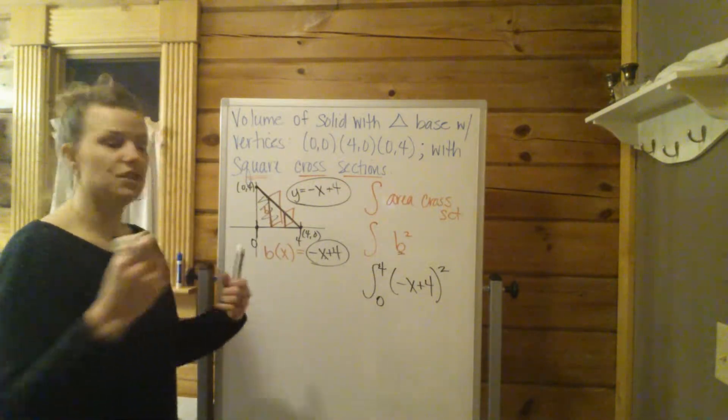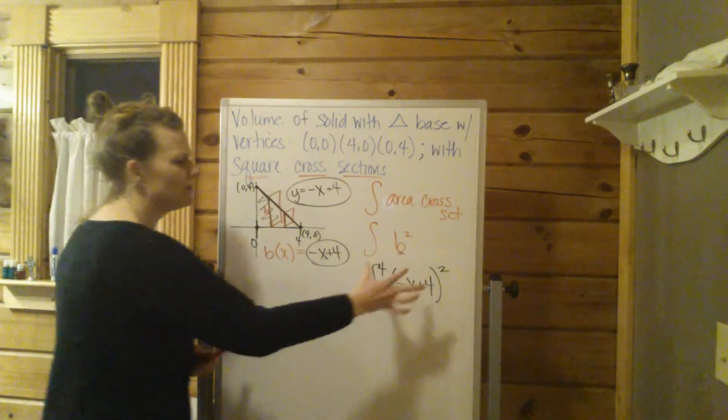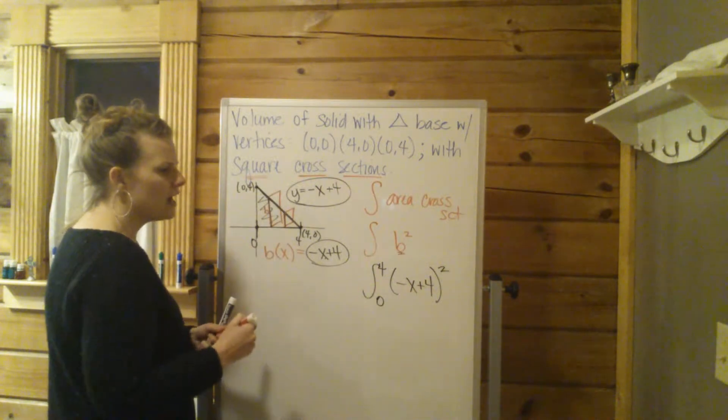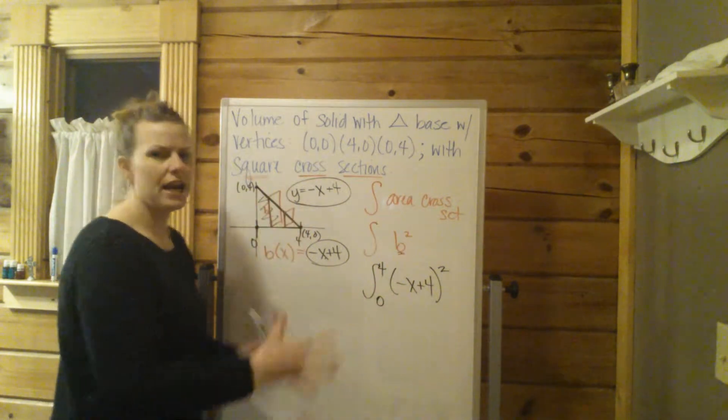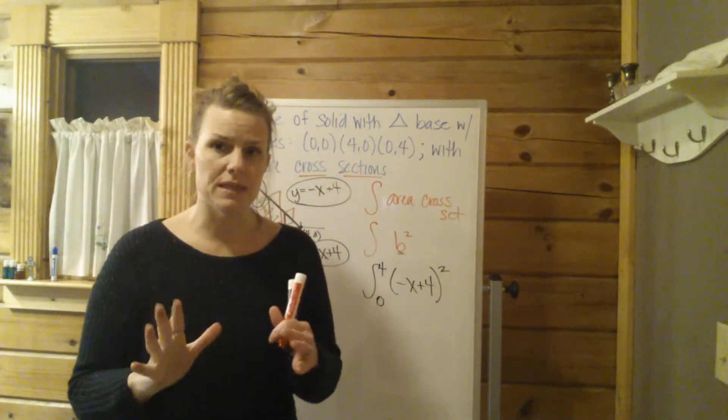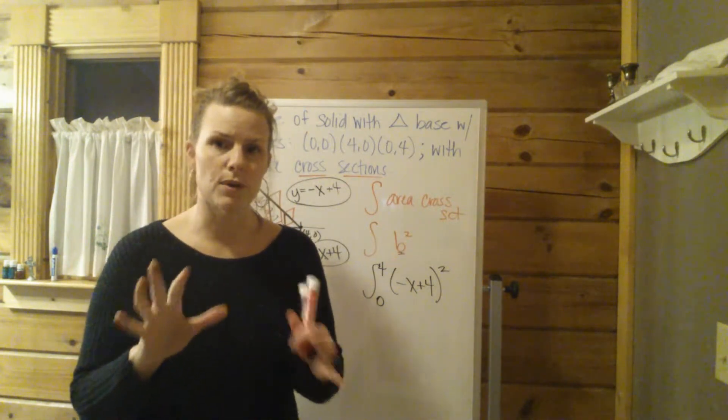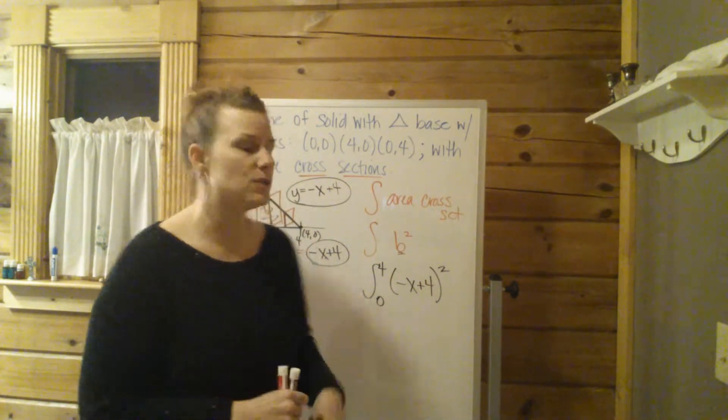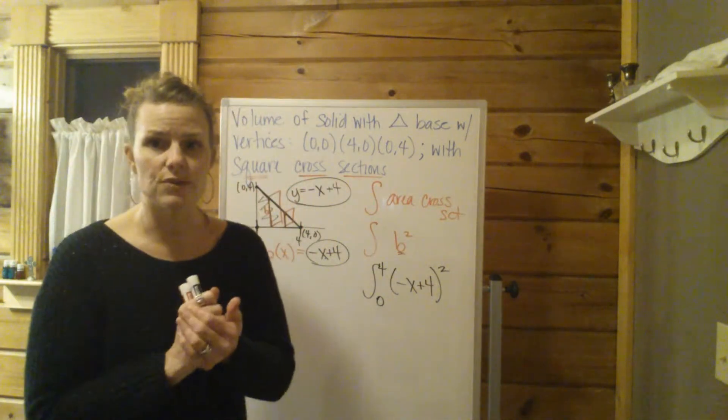So from there on out, it's just doing the integral. I would probably foil this first and then integrate doing the power rule and then just plugging in your numbers. Again, I'm going to leave the arithmetic and those kind of number mathematics to you. I just wanted to show you the setup. Please remember,